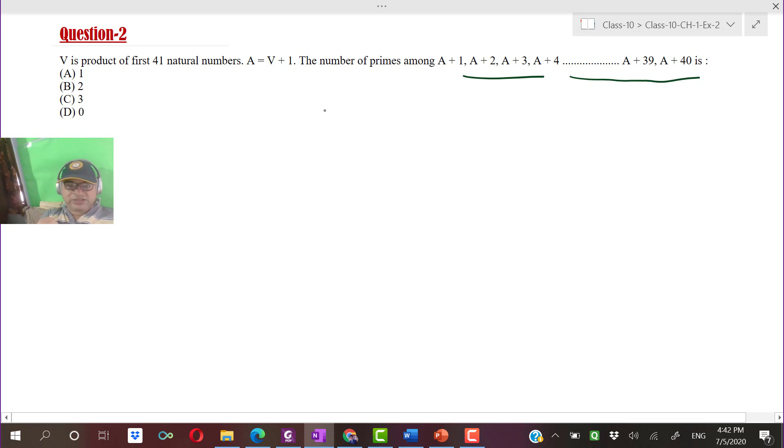V equals 1 into 2 into 3 into dot dot dot up to 41. So A, which equals V plus 1, is 1 into 2 into 3 into dot dot dot up to 41, plus 1.